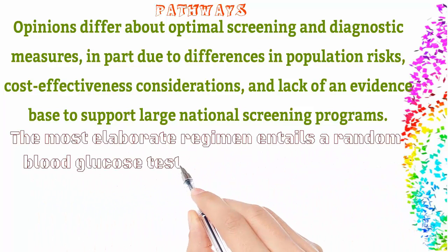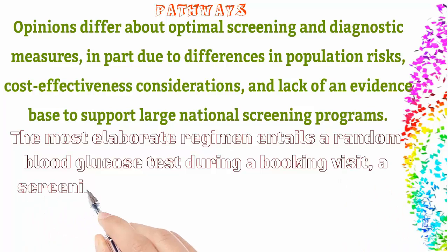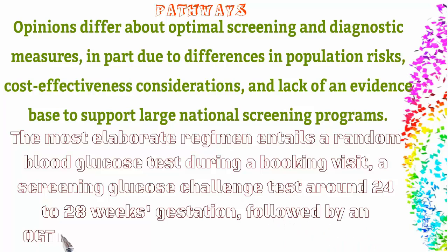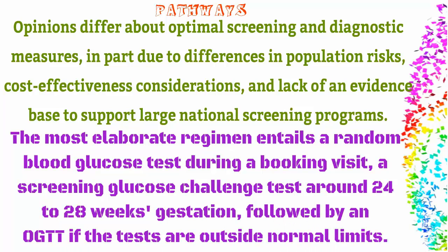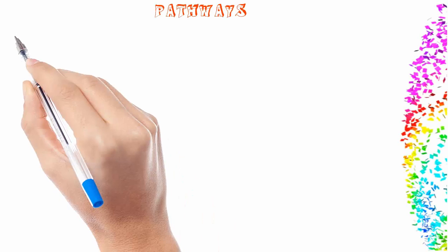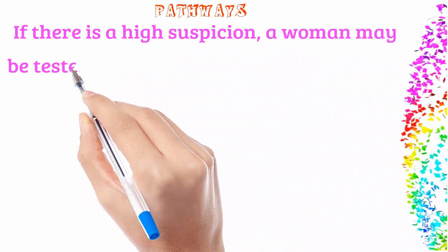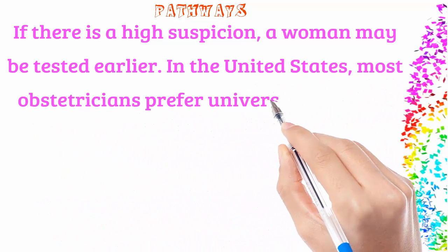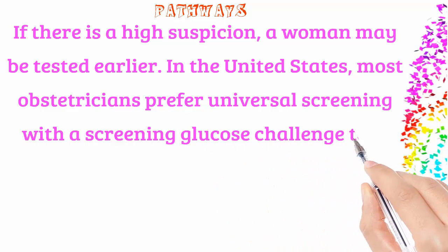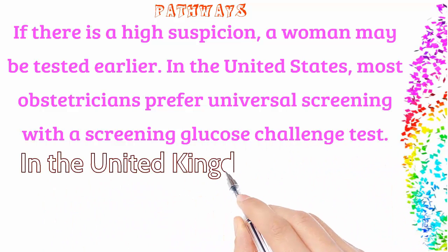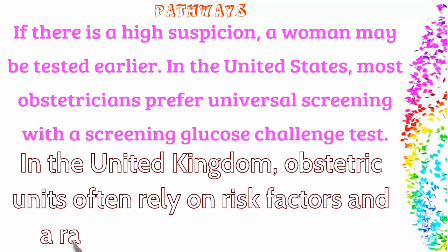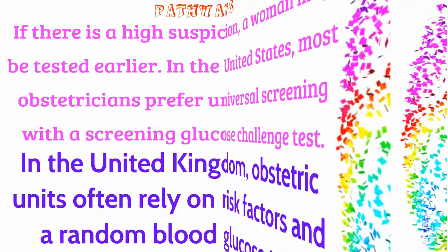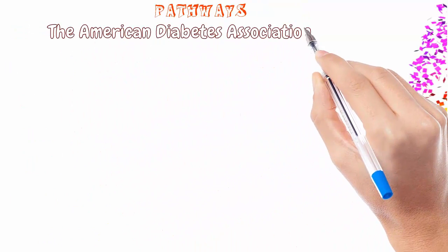The most elaborate regimen entails a random blood glucose test during a booking visit, a screening glucose challenge test around 24 to 28 weeks gestation, followed by an OGTT if the tests are outside normal limits. If there is a high suspicion, a woman may be tested earlier. In the United States, most obstetricians prefer universal screening with a screening glucose challenge test. In the United Kingdom, obstetric units often rely on risk factors and a random blood glucose test.